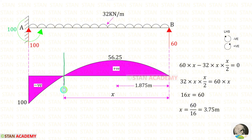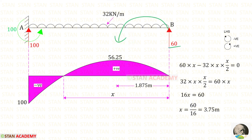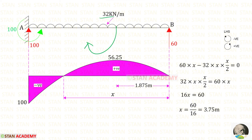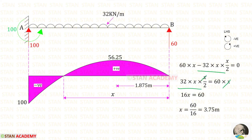Making a section at the point of contraflexure at distance x from point B and setting the bending moment to zero: Rb acts anti-clockwise (positive) at distance x; UDL acts clockwise (negative), multiplied by x × x/2. Rearranging and simplifying — we can eliminate x and 2, giving a coefficient of 16. Finally, we get x = 3.75 meters for the point of contraflexure.